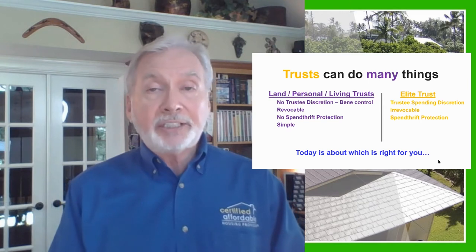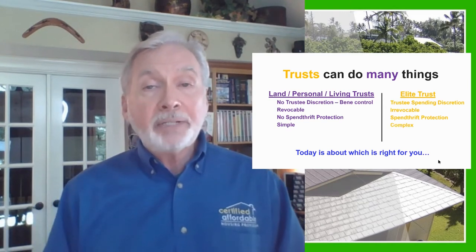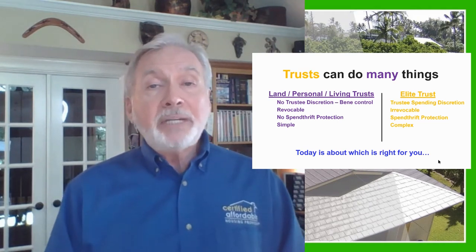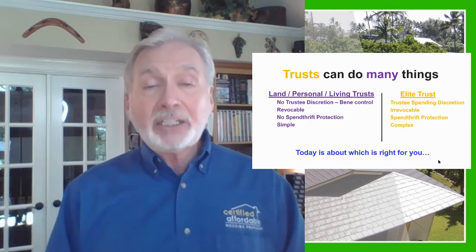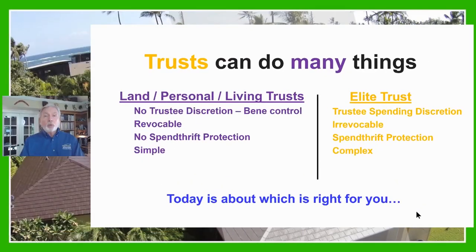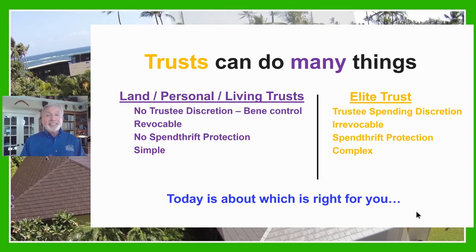A land trust, personal property trust, and living trust is what's called a simple trust in IRS terms, while an elite trust is a complex trust. A simple trust means that whatever is created inside that trust flows through to the beneficiary's tax return — whether the beneficiary is a person or an entity such as an LLC, corporation, or limited partnership. With an elite trust, it has its own tax return and does not involve the beneficiary's tax return, because it's its own taxing entity.